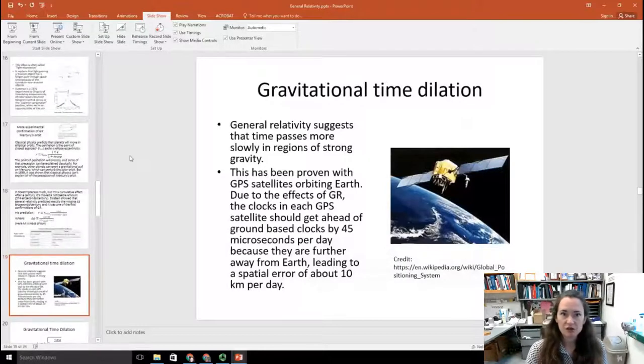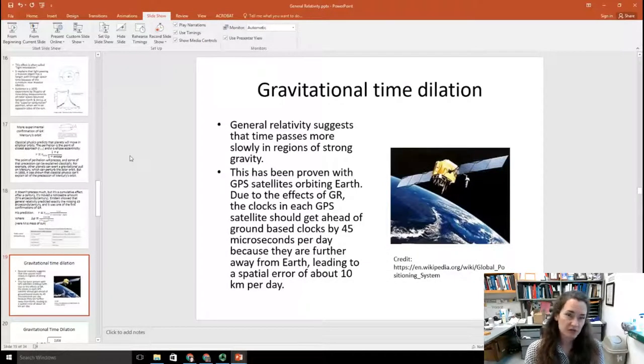Another idea that comes out of general relativity is gravitational time dilation. So you might remember time dilation from modern physics 1 in special relativity. Well, general relativity adds on to that. And it suggests that time passes more slowly in regions of strong gravity. This has been proven with GPS satellites orbiting Earth. So due to the effects of general relativity, the clocks in each GPS satellite should get ahead of the ground-based clocks by 45 microseconds per day. Because they're further away from Earth and space time isn't as strongly bent when you're further away from Earth. This actually leads to an error that you have to correct for when you use your GPS of about 10 kilometers per day. Now that's a big deal. So our GPS would not work if we didn't correct using the theory of general relativity. So that's a very good confirmation, to me at least, that general relativity is correct.